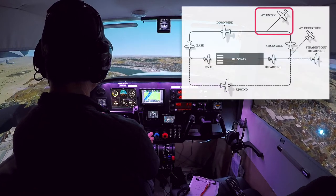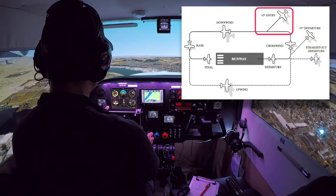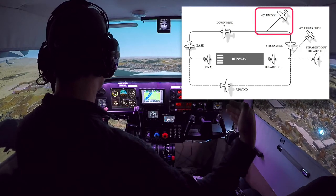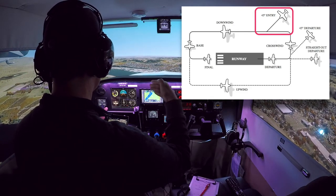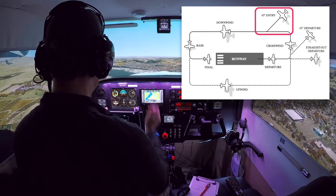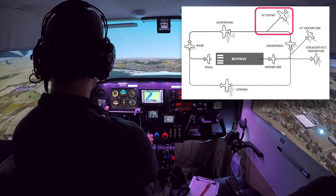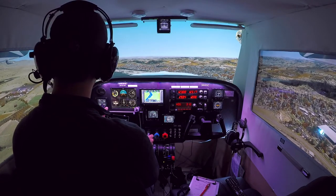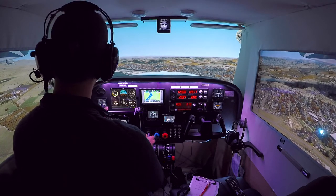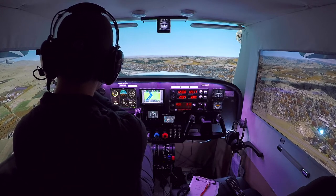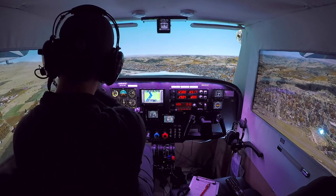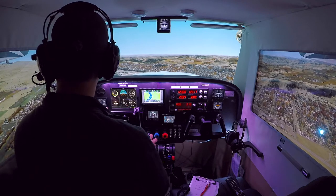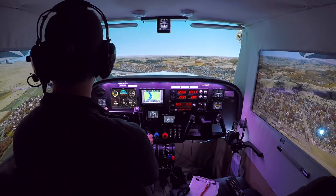Now we're flying parallel to the runway. This is a good chance to talk about making a 45-degree entry. If you're coming from outside of the airport area, generally accepted pattern entry is to come at a 45-degree angle to the downwind leg and enter that way at pattern altitude — then everyone knows where you'll be. In terms of judging how far away from the field to be, in the real world the runway should be about halfway up the strut or halfway up the wing, and we're at about the right place.